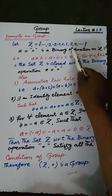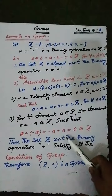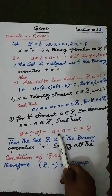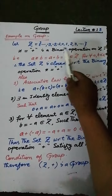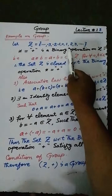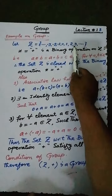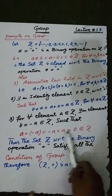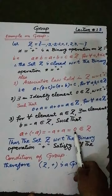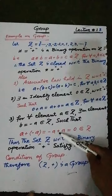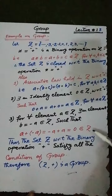That is, for the element 1 there exists an element minus 1; for the element 2 there exists an element minus 2; and for the element 3 there exists an element minus 3, with respect to the binary operation addition. The addition of 1 with minus 1, of 2 with minus 2, and of 3 with minus 3 each gives the identity element 0.